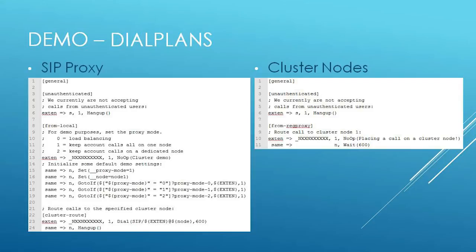The dial plans are also pretty straightforward. The cluster node dial plans just have a no-op and a wait inside them — for the purposes of the demo, we just want to see stuff get routed to a cluster node; we don't have to go to the PSTN or do voicemail. We just want to see the CLI light up so we know that call is going there. The registration proxy also has a pretty simple dial plan. We specify the proxy mode — what kind of scenario we're doing: is it load balancing or some other scenario? Based on that, we conditionally go to one of the proxy mode contexts, which implement some kind of cluster routing logic. Those contexts set the target node and then call the cluster route context, which does the dial and sends the call to that node.